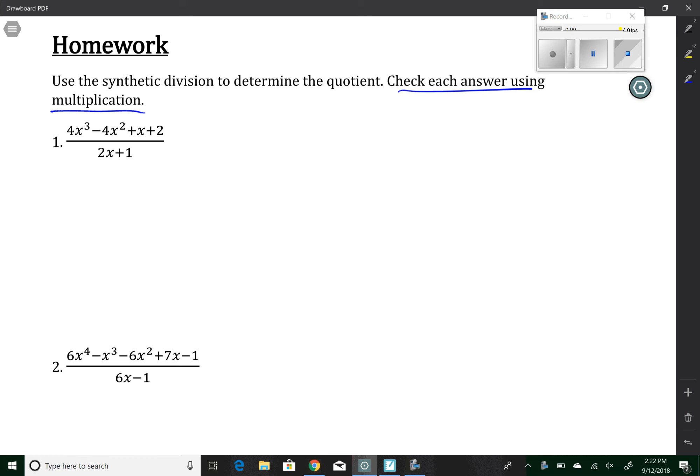So the first one here has a 2x plus 1 to determine what goes in that box, what we're dividing by. We set this equal to 0. If you solve, you get negative 1 half. So negative 1 half is going to be what's in that box. Then I'll write down my coefficients for negative 4, 1, and 2.